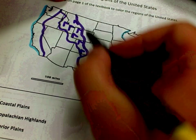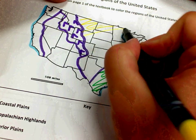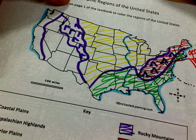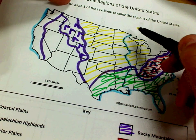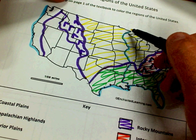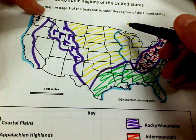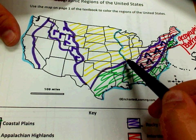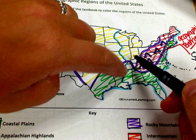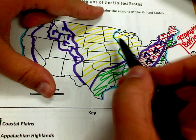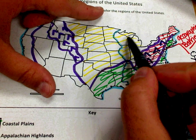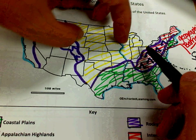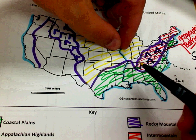The Interior Plains — this is kind of the biggest region we colored today. This right here, the Mississippi River goes right down through here, and all of this area that it covers — see how the Mississippi River fills all of this? The Mississippi River provides water for all of this region. Because it does that, it makes this region very, very fertile.